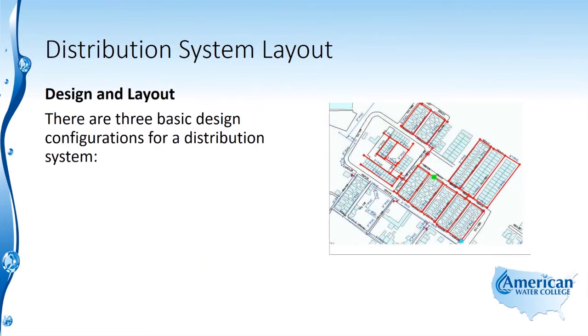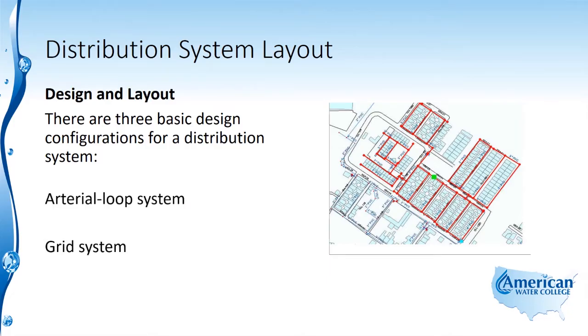There are three basic design configurations for a distribution system: the arterial loop system, the grid system, and the tree system.